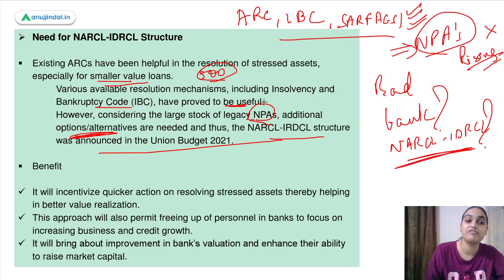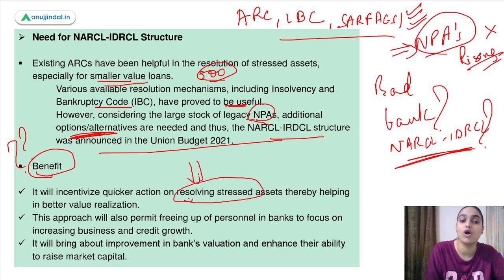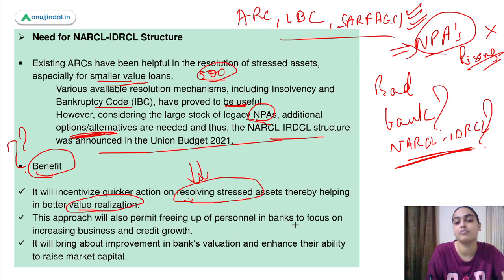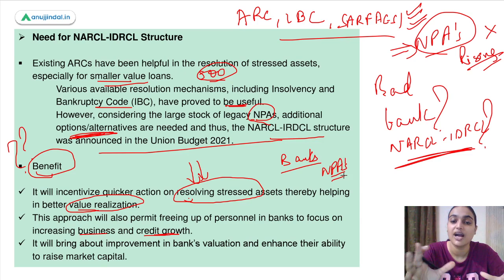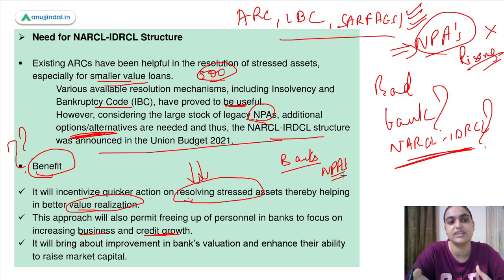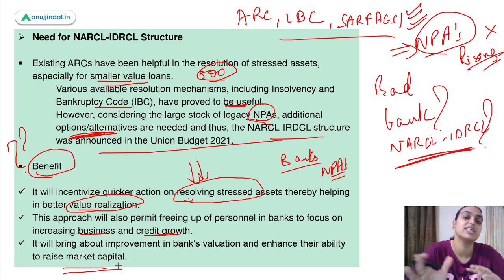The benefits of this structure: it will incentivize quicker action on resolving stressed assets, with better value realization. It will also free up personnel in banks to focus on growth-related areas — if banks themselves had to recover NPAs, a lot of time, effort and resources would go into recovery. By selling to NARCL, the bank's time, money, effort and resources are saved and can be utilized for growth. Moreover, it will improve banks' valuation and their ability to raise more funding from the market.